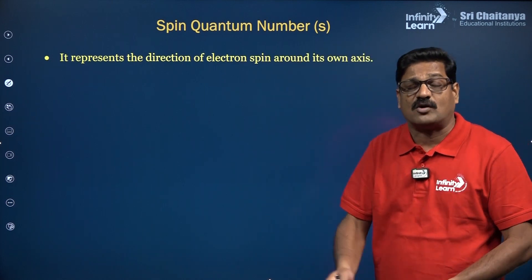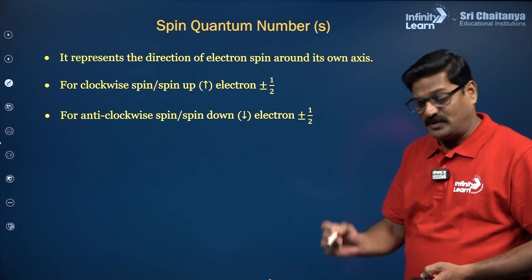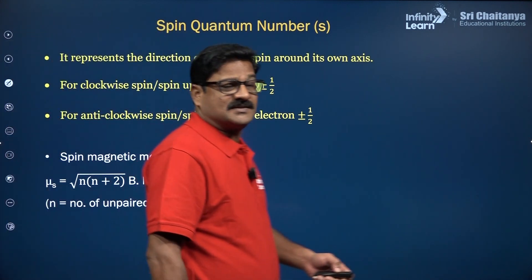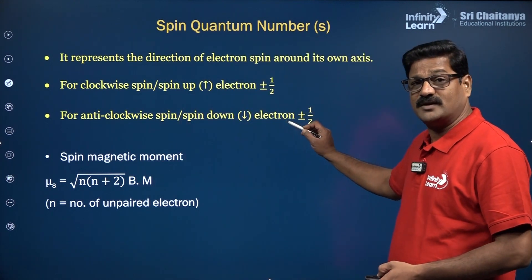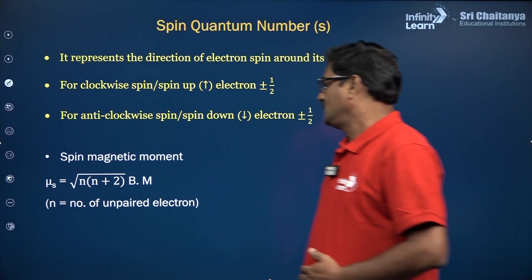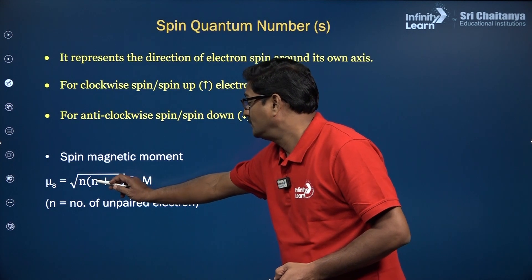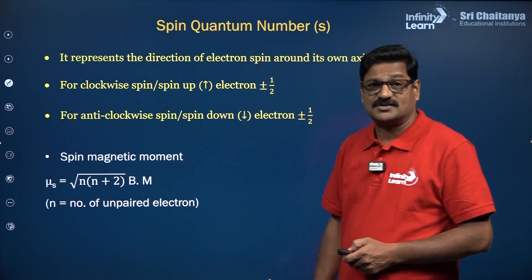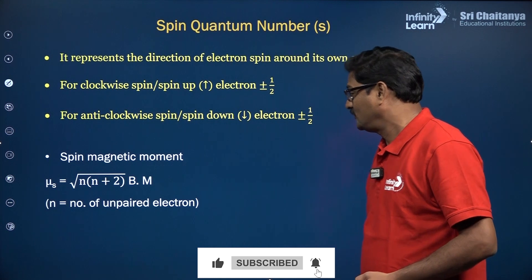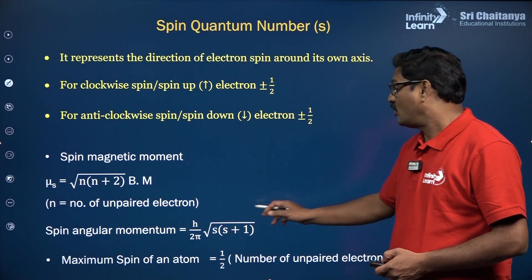The spin quantum number represents the spinning of an electron about its own axis. An electron revolving in a clockwise direction has spin quantum number +1/2, and in the anti-clockwise direction, −1/2. The spin magnetic moment is given as μ = √(N(N+2)) Bohr magnetons, where N is the number of unpaired electrons. The spin angular momentum is √(s(s+1)) × h/2π, where s is the total spin.